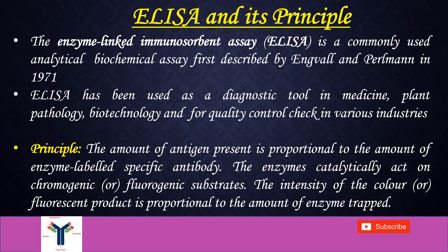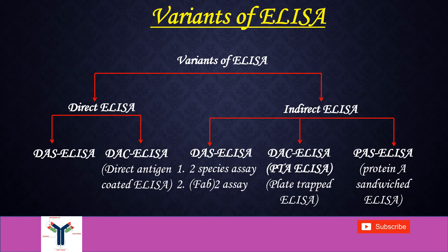The basic principle is the amount of antigen — that is the protein of our interest to detect — present is proportional to the amount of enzyme-labeled specific antibody. The labeled enzyme catalytically acts on the chromogenic or fluorogenic substrates, and the final intensity of the colour or fluorescent product is proportional to the amount of enzyme trapped.